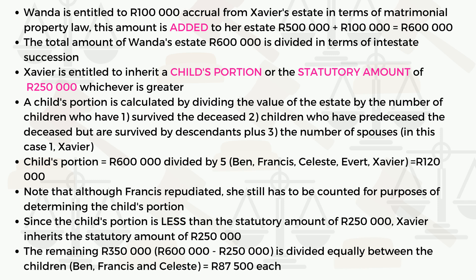Xavier is entitled to inherit a child's portion or the statutory amount of 250,000 — whichever is greater. So Xavier inherits the greater of the two: if the child's portion is worth more than 250,000 he gets that, but if the statutory amount is higher he gets 250,000.